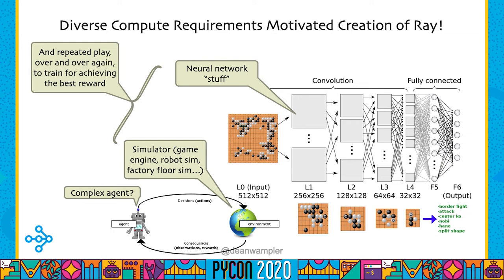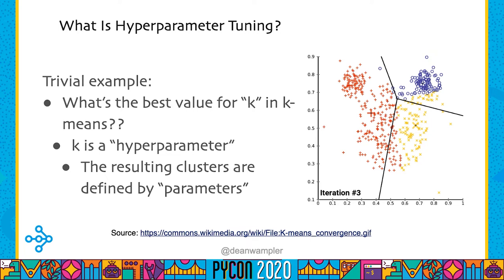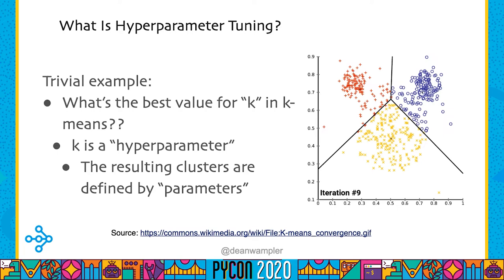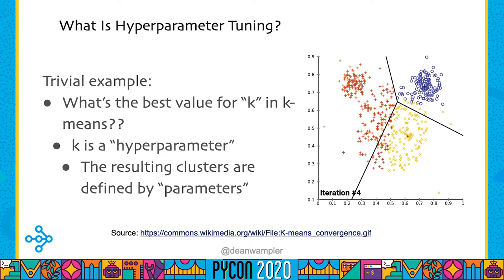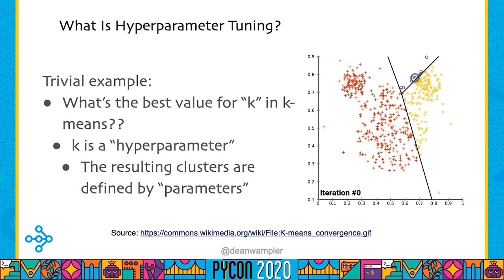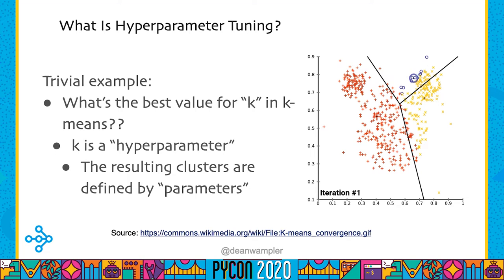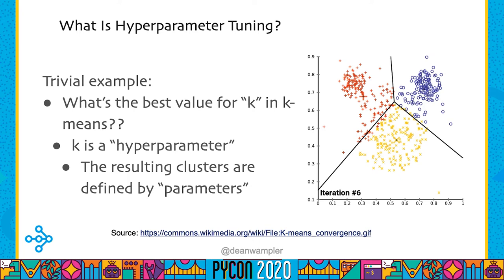Hyperparameter tuning asks: what's the best model structure to use? The simplest example is K in K-means clustering — once you pick K, the algorithm finds the clusters. With two-dimensional data you can plot it and see the best choice, but with multidimensional data beyond three dimensions, you have to run the algorithm many times with different values of K to find the best one. That's what hyperparameter tuning is about: finding the right structure, then training the model to get the actual parameters.